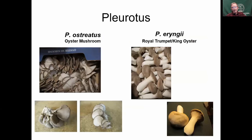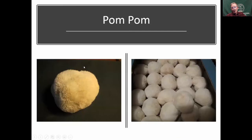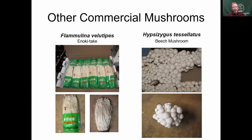Here are pictures of the major cultivated species: portobello and cremini are the same mushroom — Agaricus bisporus — just packaged differently. Then there's shiitake, various oyster types including the king oyster or royal trumpet, and the pom-pom or lion's mane. Others include Flammulina — enoki or the Japanese word 'naritake' — and the beech mushroom.